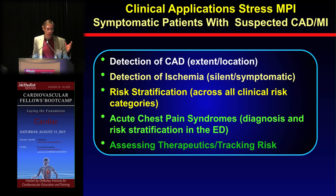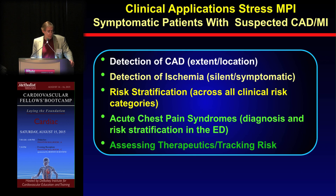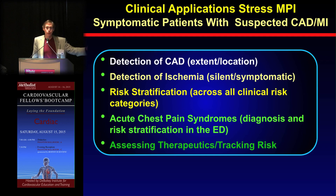Let's talk about the applications of stress myocardial perfusion imaging. One is the detection of coronary artery disease — both the extent and location. Another is the detection of ischemia, since ischemia is not a good thing to have, and we can look at both silent and symptomatic ischemia. By knowing ischemia and other parameters, we can risk-stratify patients across all clinical risk categories, including patients with acute chest pain.